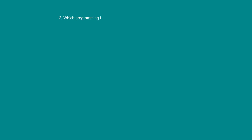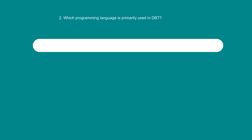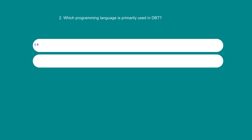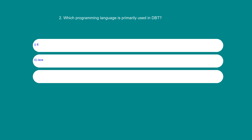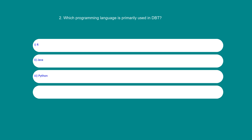Which programming language is primarily used in dbt? Option 1: R. Option 2: Java. Option 3: Python. Option 4: SQL. The answer is 3: Python.